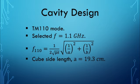TM110 is selected as the mode of operation. The side length to frequency relation is as shown in the equation below. Since I have decided to make a cube-shaped cavity resonator, all the side lengths are equal, and the side length is equal to 19.3 cm to satisfy the 1.1 GHz frequency.